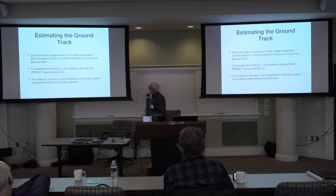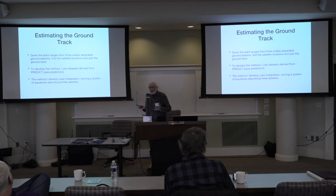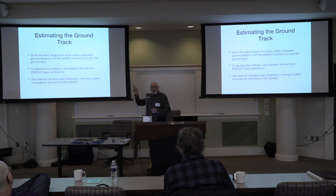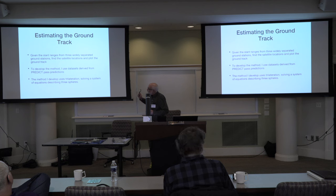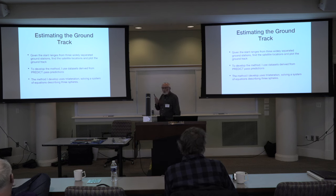Undeterred, I thought: if we had slant ranges from three different ground stations, can we figure out what the actual satellite position is as a function of time as it passes? Since I didn't have actual radio Doppler shift data, I used data sets from the PREDICT pass predictions at three different locations. That has the advantage of actually giving you the satellite locations, so I can see how well it does. I used a method of trilateration described in Wikipedia — I took it straight out of there.